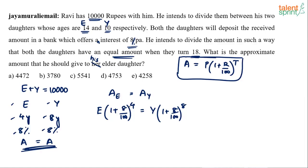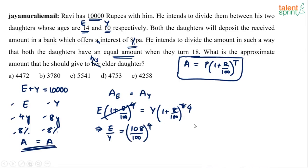The (1 + 8/100) terms partially cancel — we are left with power 4 on one side. So E divided by Y equals (108/100) to the power 4, which simplifies to (27/25) to the power 4. That means the ratio E to Y is 27 to the power 4 divided by 25 to the power 4.